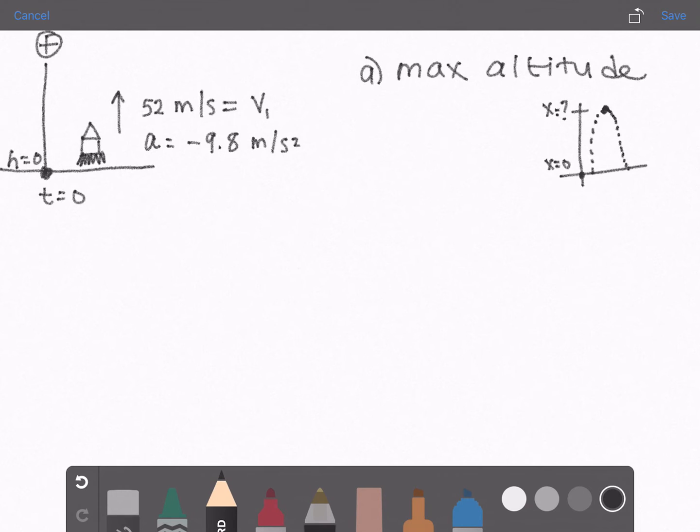So the equation we will use is V1 squared plus 2A times X2 minus X1 equals V2 squared.